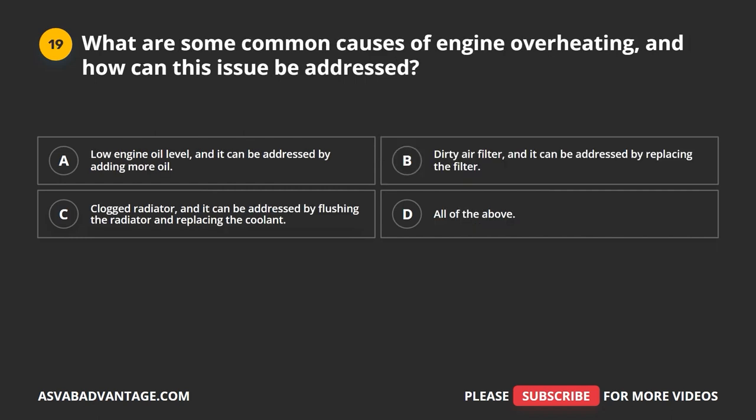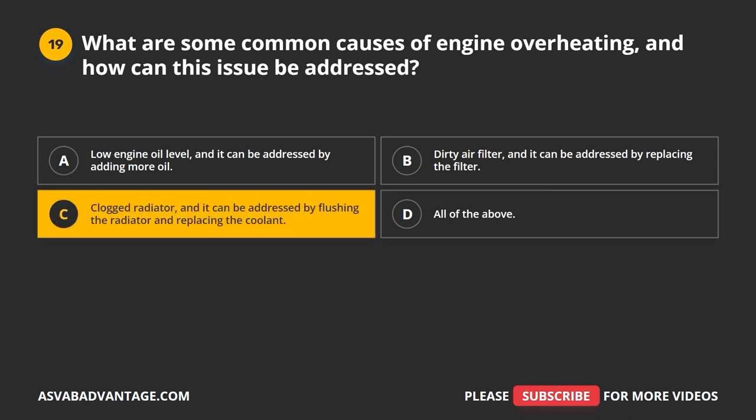Question 19. What are some common causes of engine overheating, and how can this issue be addressed? A. Low engine oil level, addressed by adding more oil. B. Dirty air filter, addressed by replacing the filter. C. Clogged radiator, addressed by flushing the radiator and replacing the coolant. D. All of the above. The correct answer is C: clogged radiator, which can be addressed by flushing the radiator and replacing the coolant.